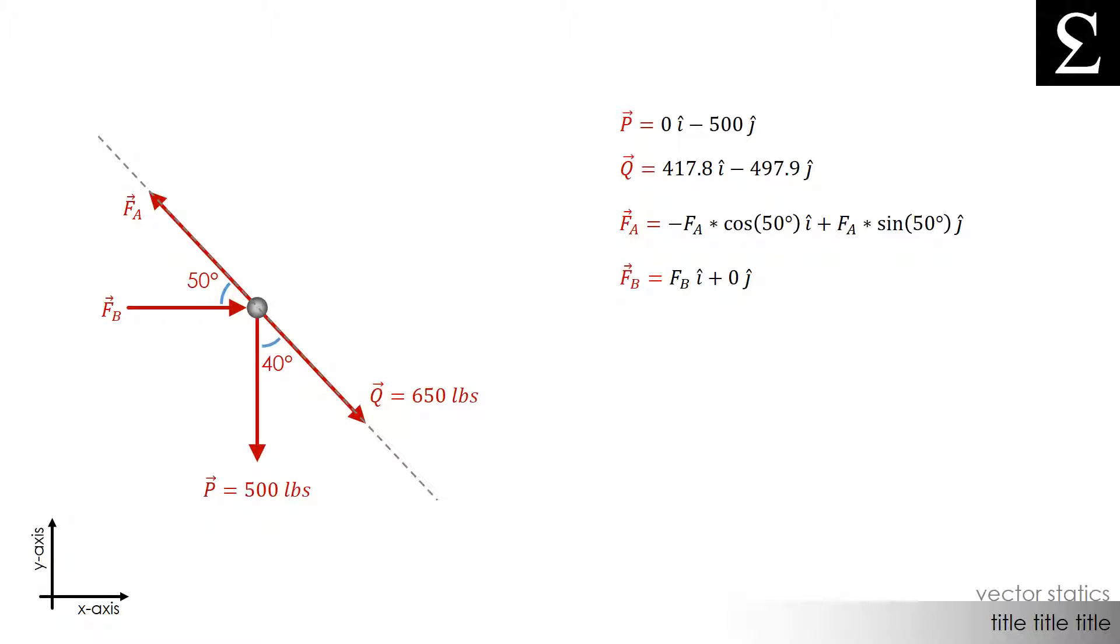Alright so now let's move on to the summation of forces in the x direction to determine what the magnitude of FB is. We have zero from the P force, 417.8 pounds from the Q force minus FA times cosine 50 degrees plus FB.